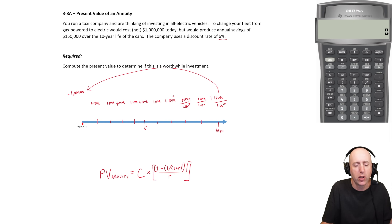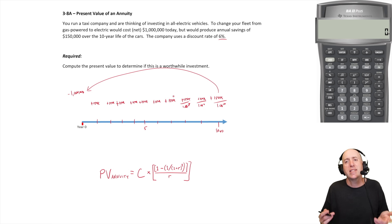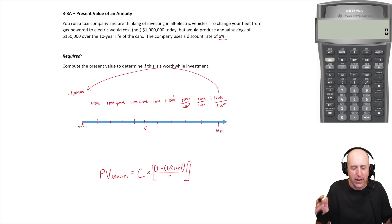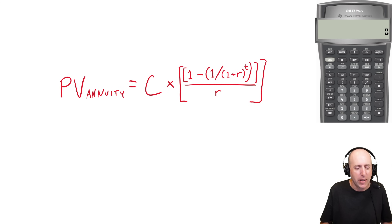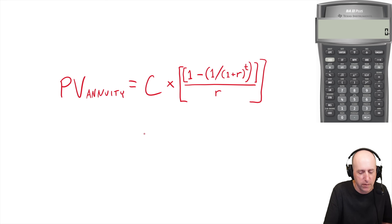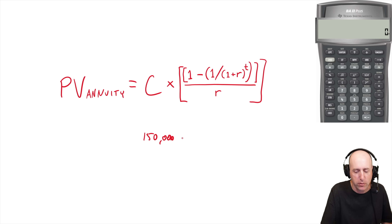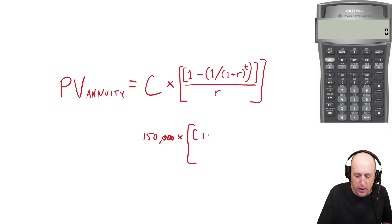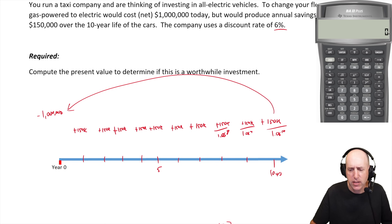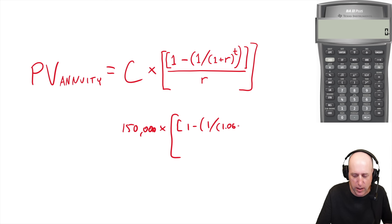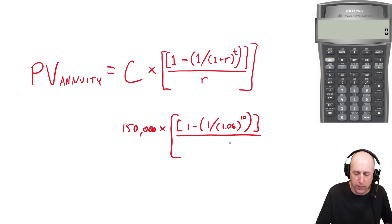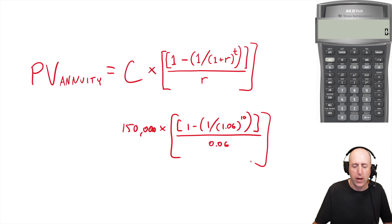Some smart mathematician looked at this situation and thought: why brute-force calculate 10 present values and add them together when you can solve it mathematically? Here's the formula they came up with: the present value of an annuity equals the recurring cash flow amount — in this case $150,000 — times the quantity: one minus one divided by (1 plus the discount rate) to the power of t, all divided by the discount rate. So that's one minus one over 1.06 to the 10th power, divided by 0.06.